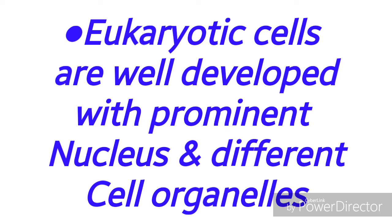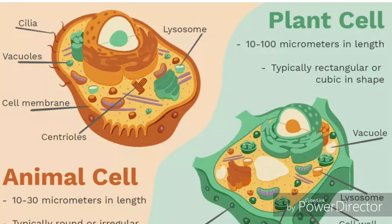In the case of bacterial cells, they are prokaryotic cells which are primitive in nature. You can see here the structure of plant and animal cells — both are eukaryotic cells. They are very well developed and contain a prominent nucleus. Nucleus is the control center of the cell, and surrounding the nucleus different cell organelles are present which have vital functions of their own.